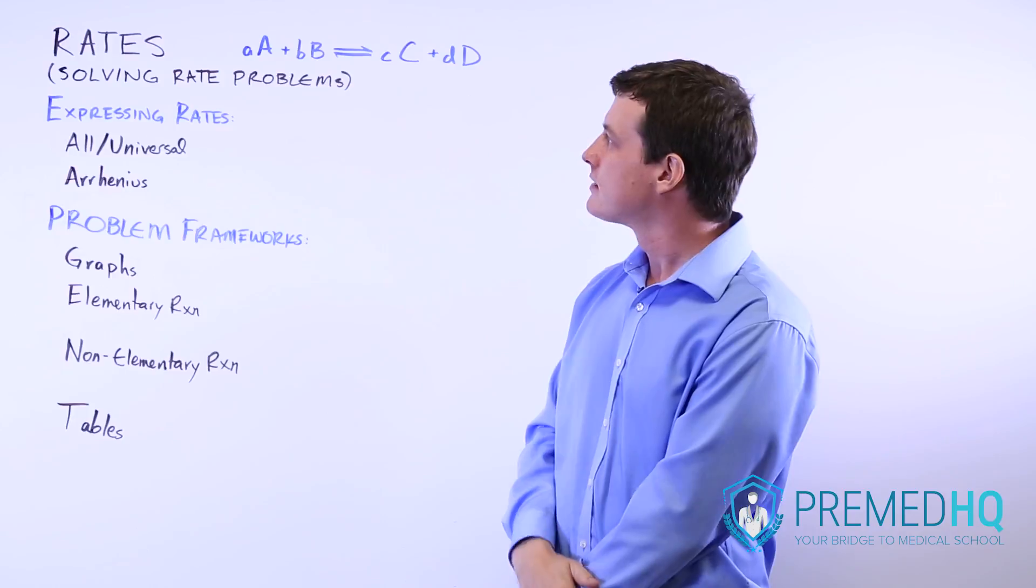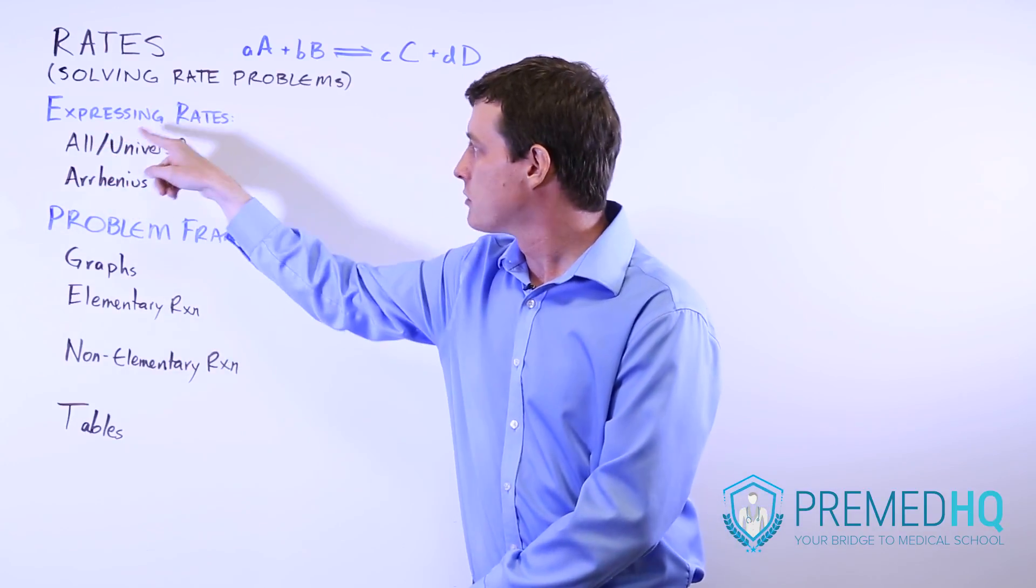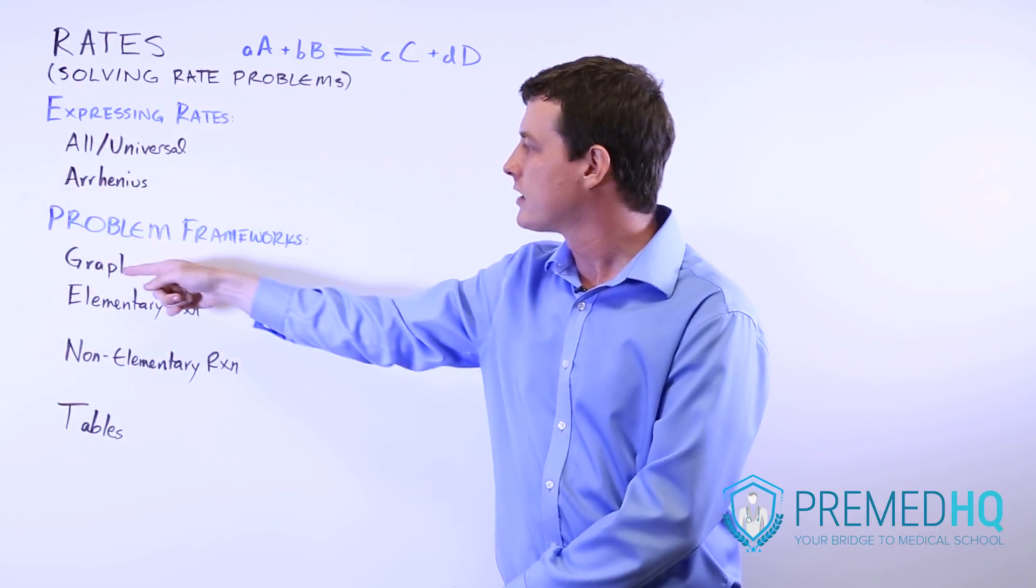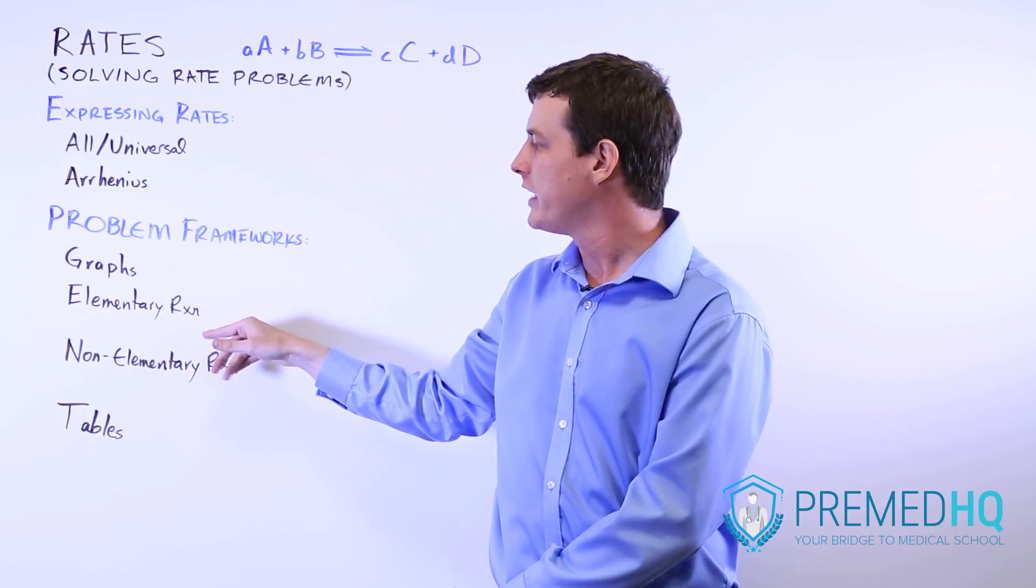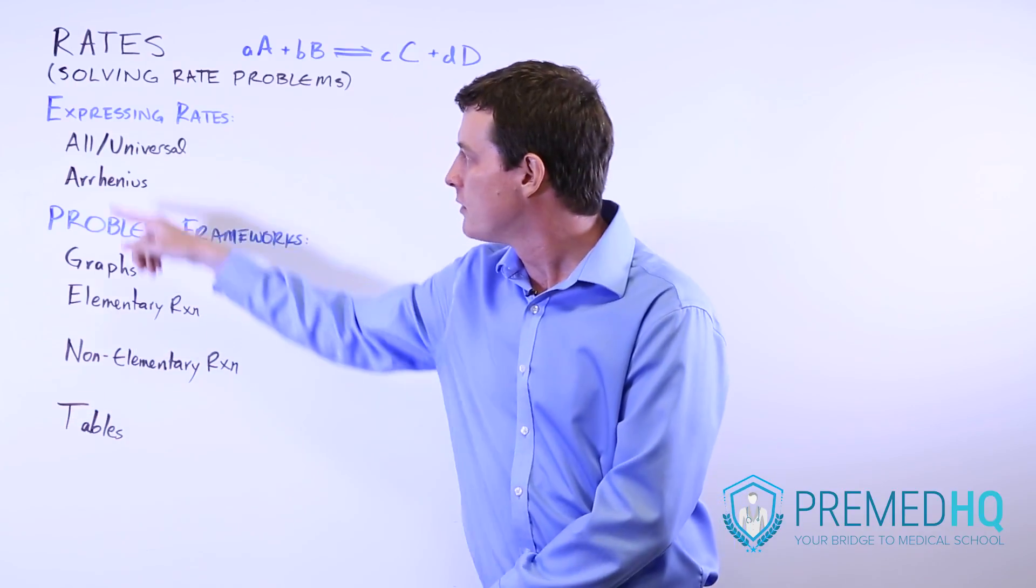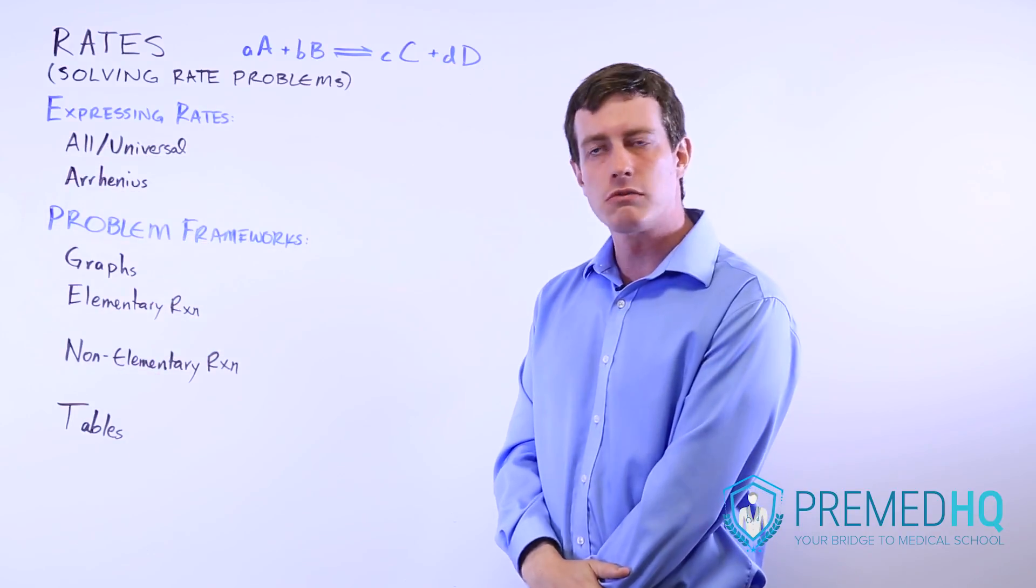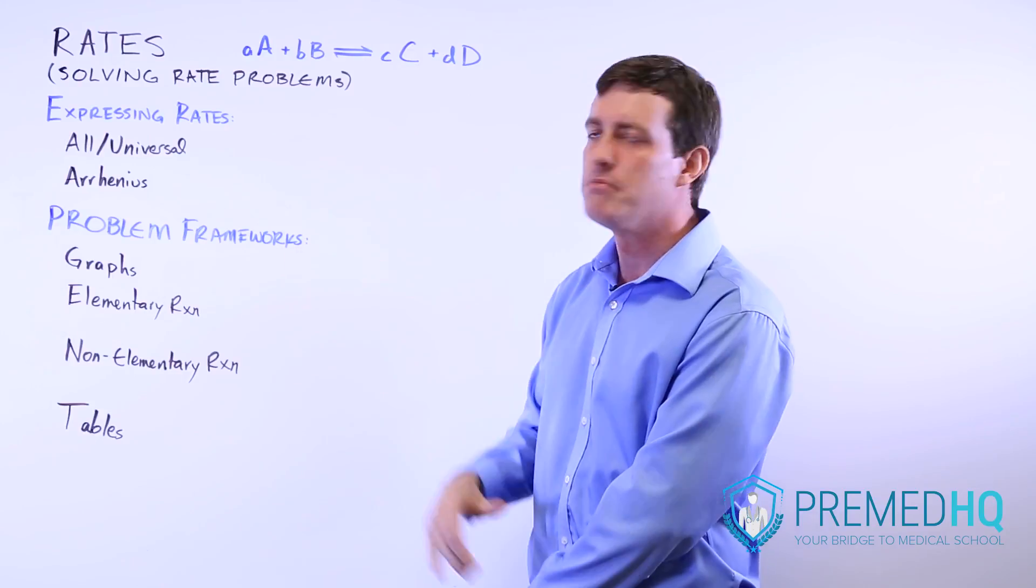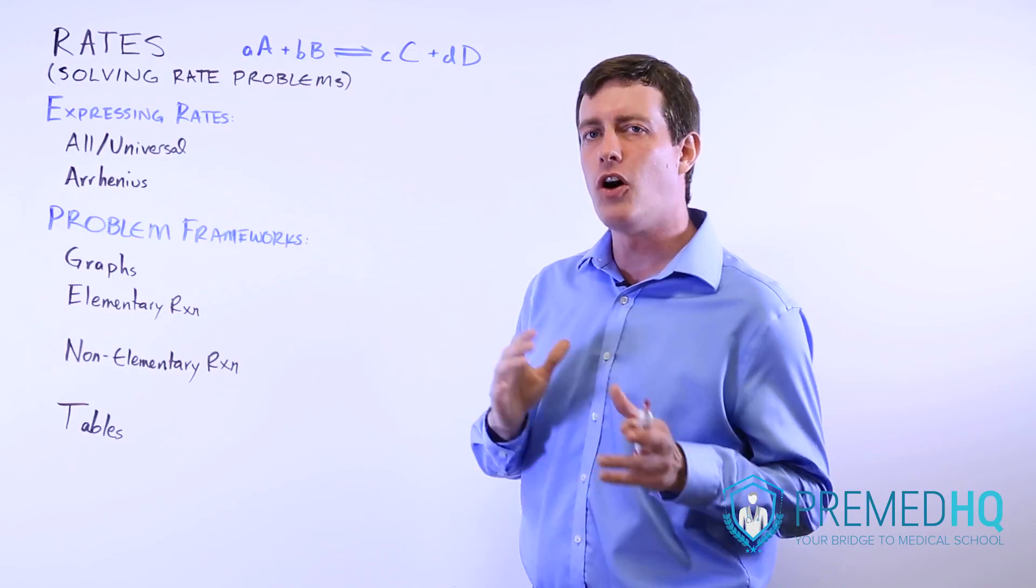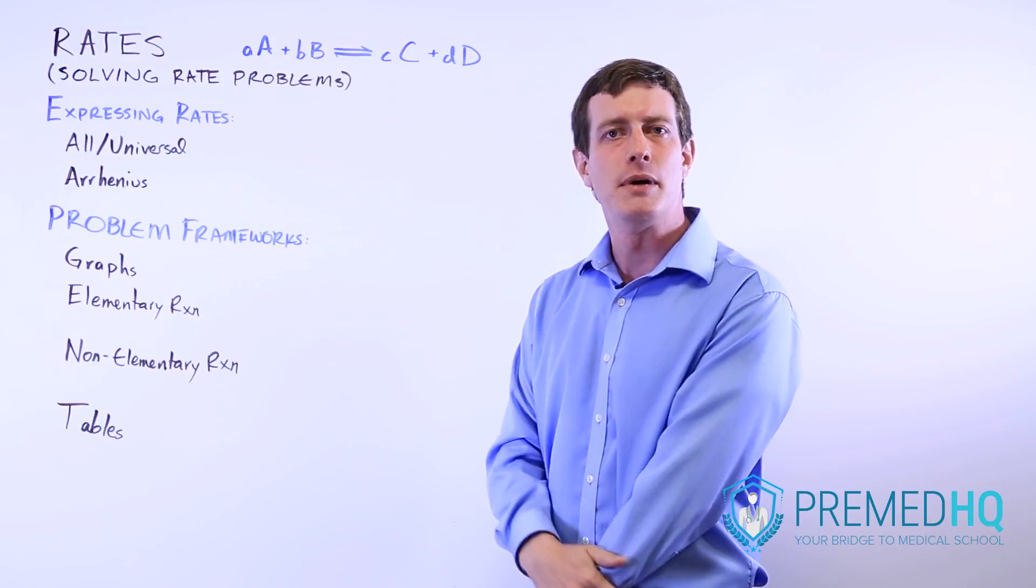I call this the double agent rate model because there are two ways of expressing rates that both start with A, and then there are problem frameworks of graphs, elementary reactions, non-elementary reactions, and tables. So double A-G-E-N-T. We'll go through all of these different components, and it will provide a big picture overview of all the different ways you might encounter rates and how to deal with them when they come up.